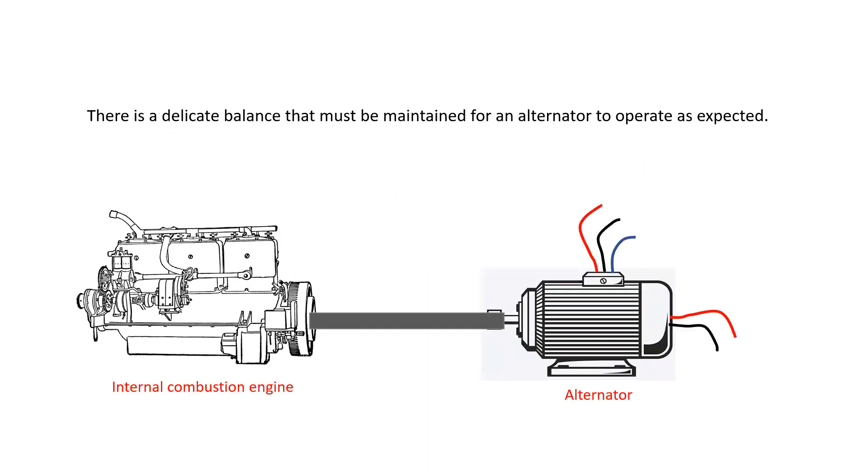There's a delicate balance that must be maintained for an alternator to operate as expected. We know we need a constant voltage and constant frequency, and we know that those are going to be affected by the speed of the prime mover and the DC excitation that's applied to the alternator.